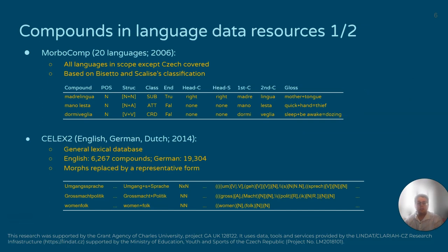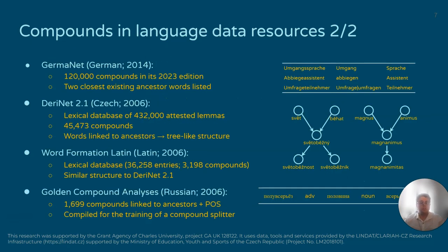This classification is being used in the construction of a compound database called MorboComp, which covers 20 languages including all of the languages in our scope except Czech, but unfortunately the project is dead. So we have to compile a list of resources of varying sizes, including Selex, Germanet (which is huge), Derenat (which is smaller but contains several dozen thousand compounds), the same goes for Word Formation Latin, and the smallest one we have for Russian — golden compound analyses — which is less than 2,000 compound words.